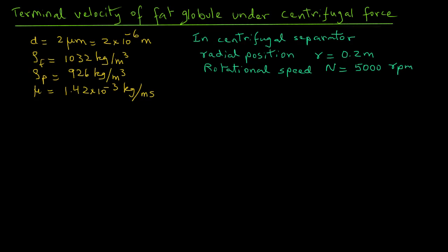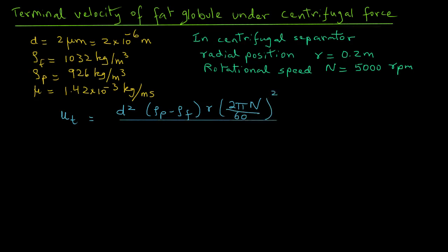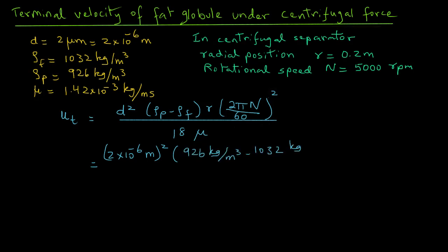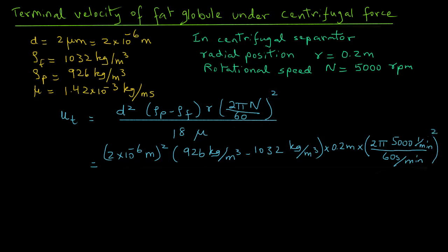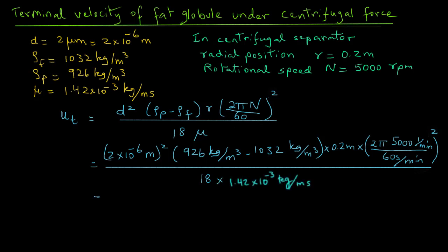From a previous tutorial, the expression for terminal velocity in a centrifugal system is d² times (rho_p minus rho_f) times r times (2πn/60)², divided by 18·mu. Substituting the values, we have (2×10⁻⁶ m)² times (926 minus 1032) times 0.2 m times (2π × 5000/60)², divided by 18 times 1.42 kg/(m·s).